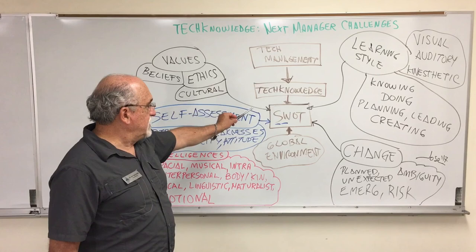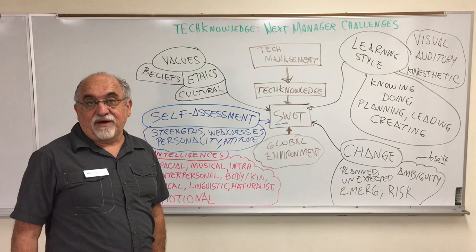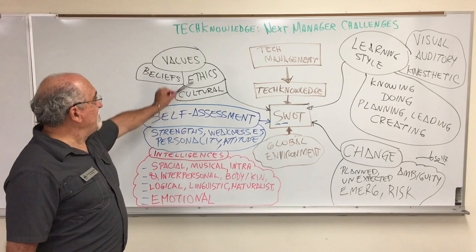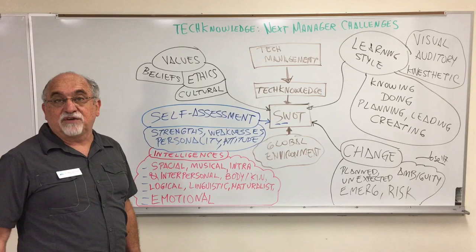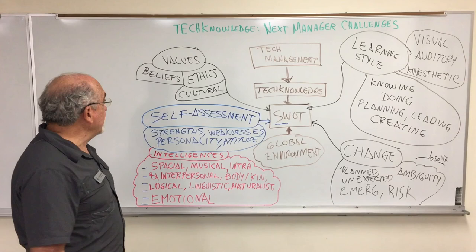All this technology mixed with the global environment has to be supported by people. These components relate to how people behave and how people function. First, we want to talk about values — covered in other videos related to the personal leadership system. When you set your own values, beliefs, and priorities, you also set the values, beliefs, and priorities of the organization.